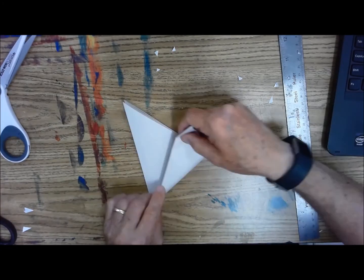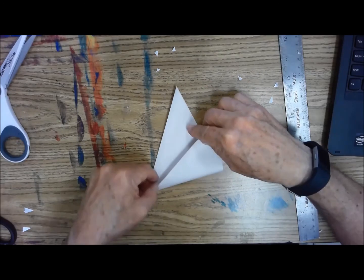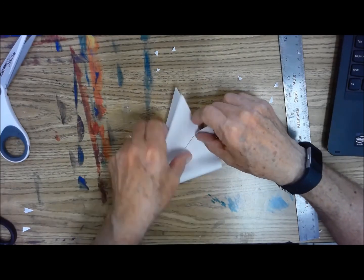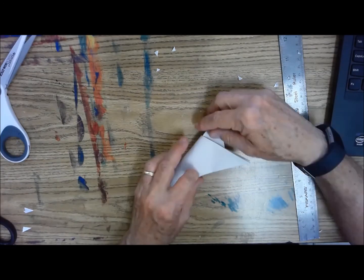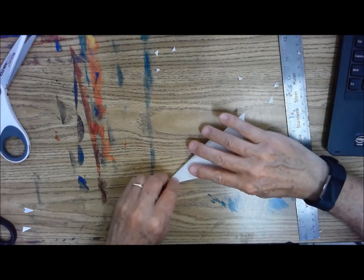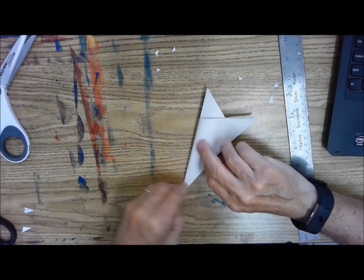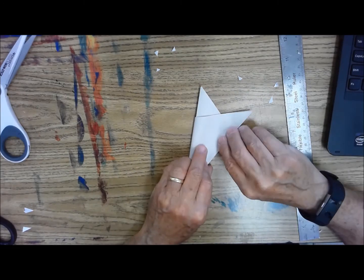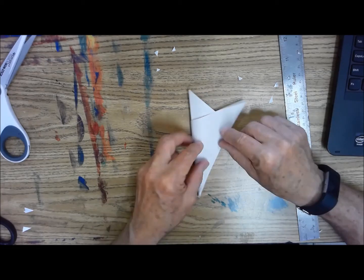At this point you can go about it two ways. You can kind of eyeball it and I do that by lightly folding. Notice I'm not pressing that down and then I kind of fold this over and then I kind of just work them back and forth until I get it divided evenly into thirds.